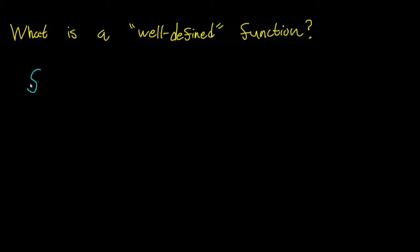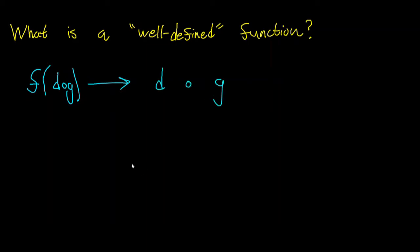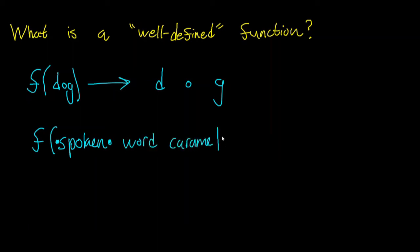Let's say I had a function f that took in as input a recording of a spoken word. Say it took in the recording of 'dog', so I'll just put in dog here. And then it outputted the spelling of that word — d-o-g. Let's say I spoke into the function 'caramel' — spoken word caramel — and it outputted the spelling of caramel: c-a-r-a-m-e-l.